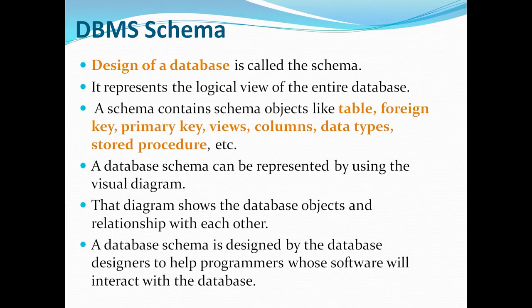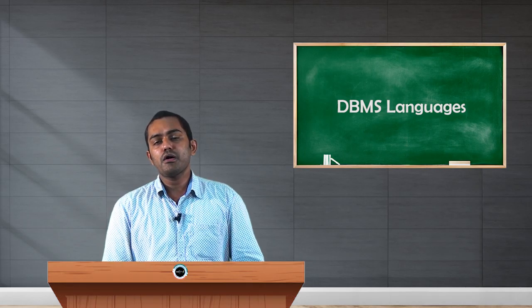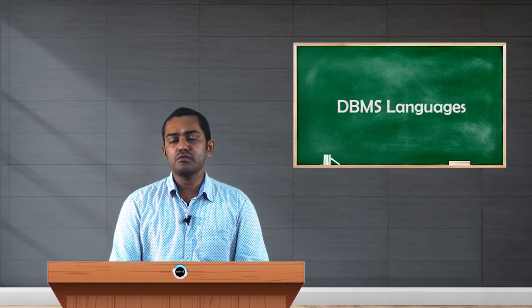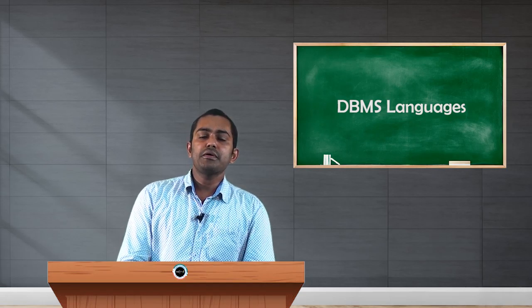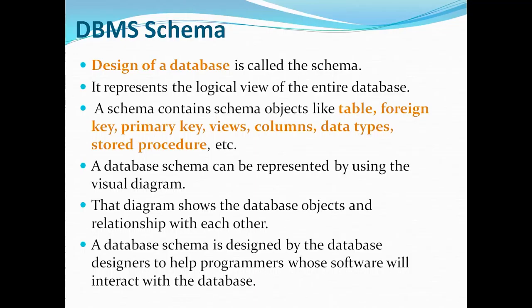We can define the database schema in the form of a diagram. While designing the schema, we need to specify schema objects like table name, which one is the primary key, which one is the foreign key, which one is the view, the column names, data types, and stored procedures — all those elements of the schema we have to specify.